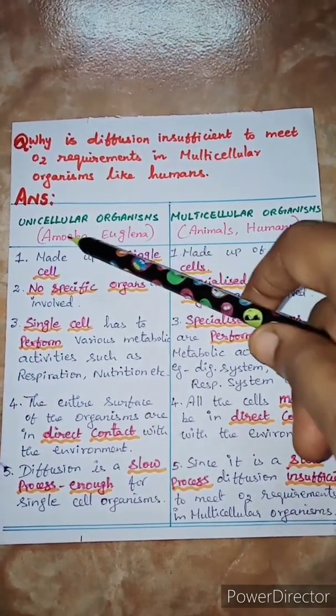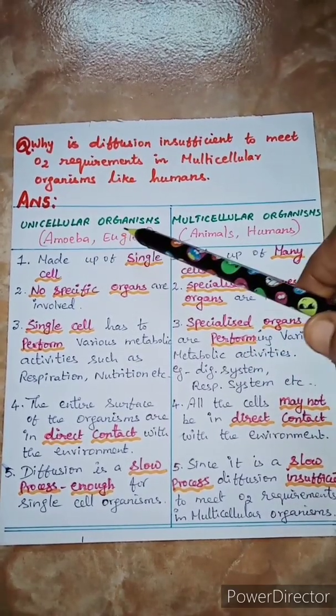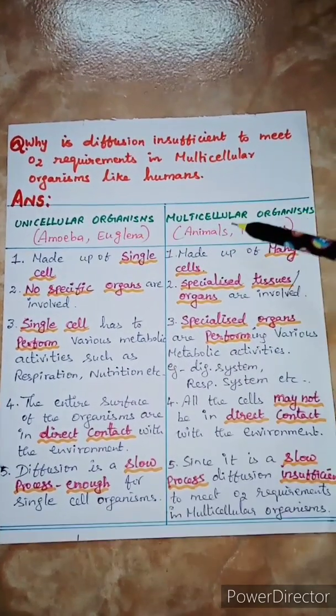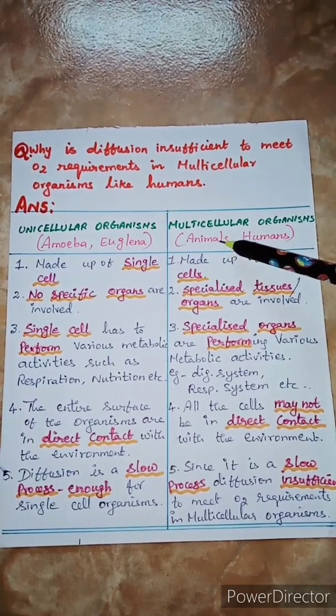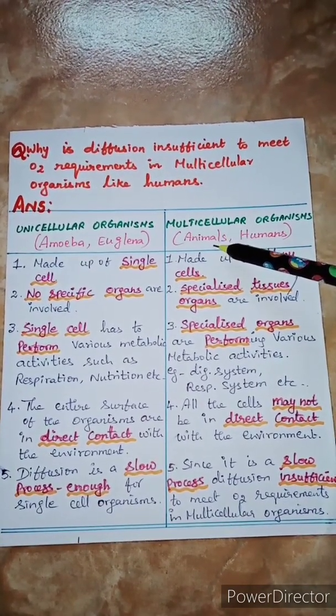The organisms made up of a single cell are called unicellular. Examples: amoeba, euglena, paramecium, etc. And the organisms made up of many cells are called multicellular organisms. Examples: any animals or humans.